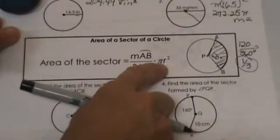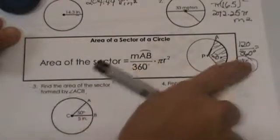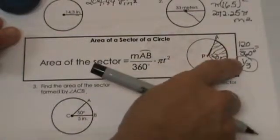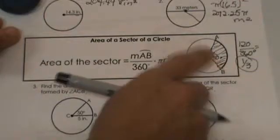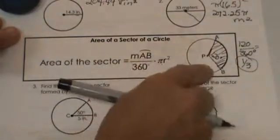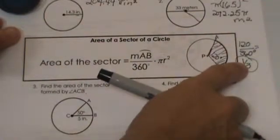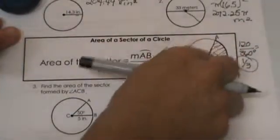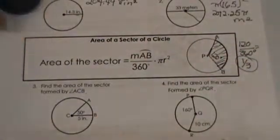So all we are going to do is find the area of the circle and then multiply it by the fraction of the circle that we are taking. So in this case we would find the area of the whole circle and then take a third of it and multiply it by one third or divide it by three, and we would have the area of just that part which is called the sector.